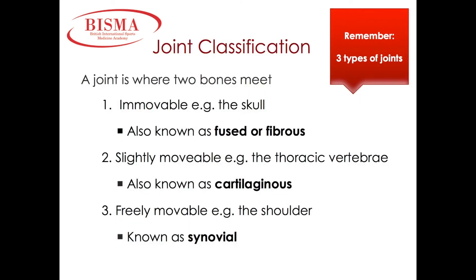Joint classification: a joint is where two bone ends meet. We have three different classifications of joints. Immovable joints, for example within the skull, are also known as fused or fibrous joints. Slightly movable joints, such as within the thoracic vertebrae, are known as cartilaginous joints. Freely movable joints, for example at the shoulder, are known as synovial joints.